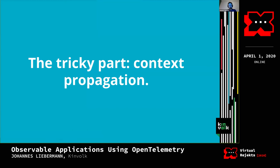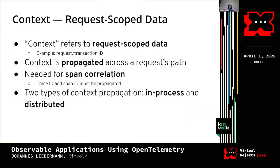In the last part, I want to demystify context propagation. Distributed tracing relies heavily on it. Context is request-scoped data — it can be a request ID, transaction ID, authentication information, or anything propagated across a chain of functions or microservices. We need context propagation in distributed tracing for span correlation: at minimum, we include trace ID and span ID with every request on the wire, and make this available to every function handling part of the workload. We have two types: in-process propagation and distributed propagation.